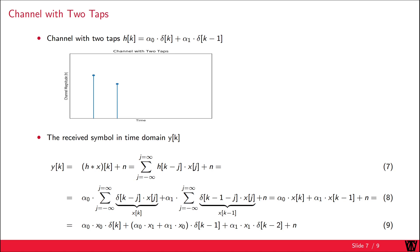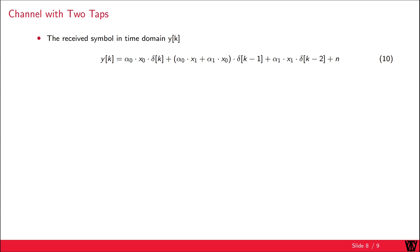We can now insert the transmit symbol X again. We have now one term with zero delay, that is alpha 0 times X0. Then a combination of alpha 0, X1, alpha 1 and X0 with a delay of 1. Additionally, we have alpha 1 times X1 with a delay of 2 and the noise.